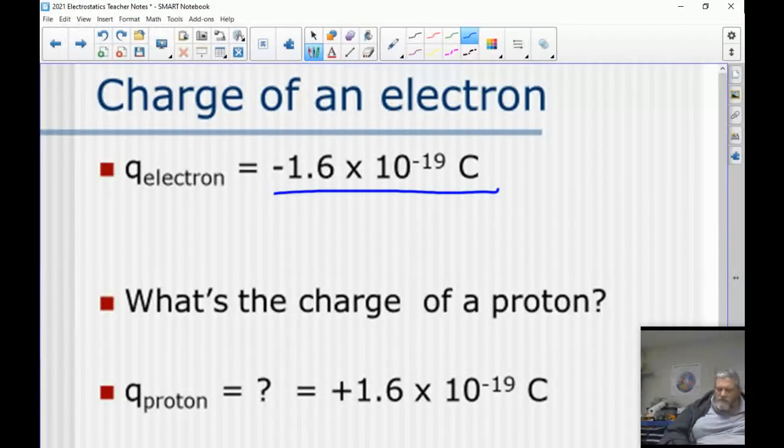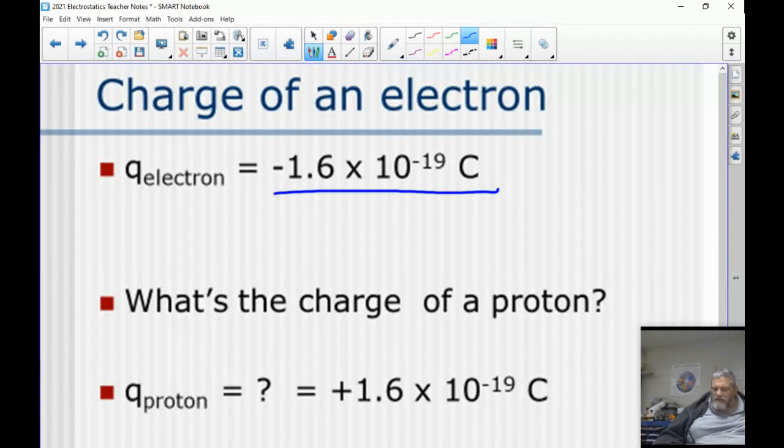And the charge of a proton is exactly the same as an electron. It's just the opposite charge, so it's positive 1.6 times 10^-19 coulombs. So they match up with each other perfectly. So if something has 50 electrons and 50 protons, then we know it is neutral because they cancel each other out.